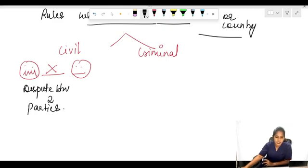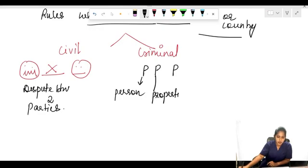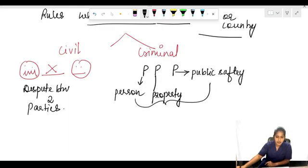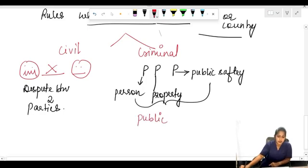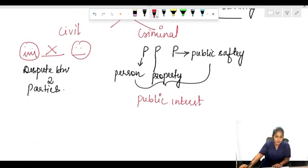Whereas here if you take the criminal law, here it is P P P. You have to remember: P is person, this P is property, this is public safety. These are all together represented or told as public interest. Anything that is happening against a public interest, that is a criminal law.